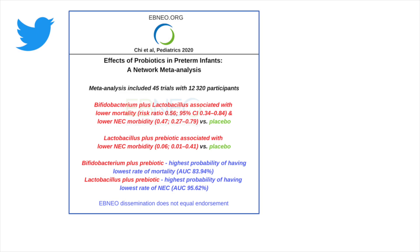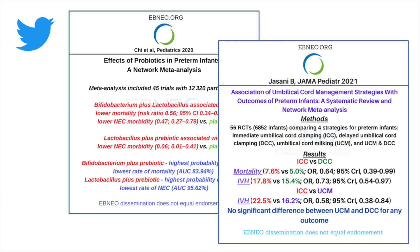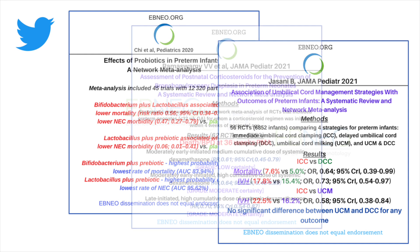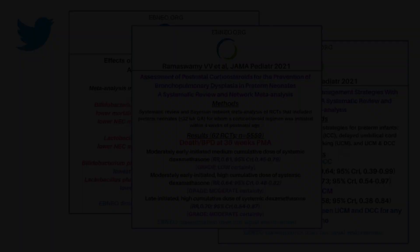In the last few months, we've highlighted a number of different network meta-analyses. There's been one on the use of different types of probiotics and supplementation on the effect on NEC, about cord management strategies, and most recently about postnatal steroid use for the prevention of BPD.